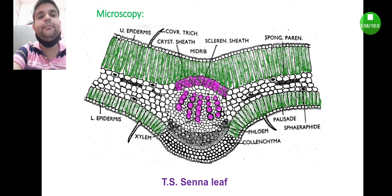Moreover, you will find the presence of collenchyma cells in it. Few important characteristic features of Senna include the presence of calcium oxalate crystals in spongy parenchyma, which is very specific in Senna.